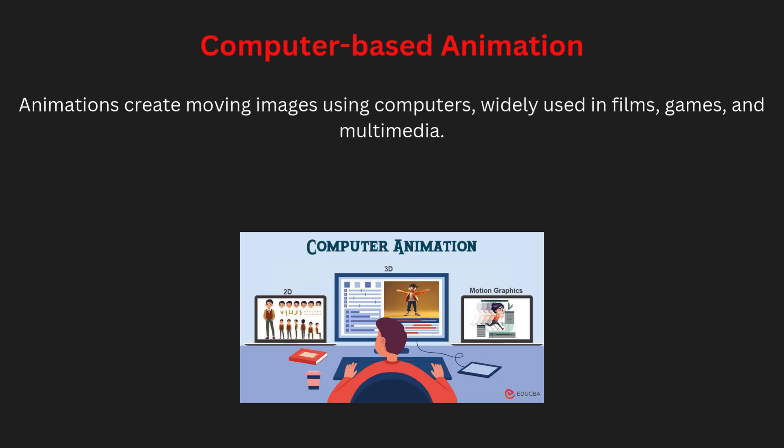Computer-based animation is the process of creating moving images using computers. These animations can be 2D, like cartoon-style animations, or 3D, like those seen in modern films and video games. The animation process involves creating a sequence of frames where each frame slightly changes from the previous one to create the illusion of movement. Software like Adobe Animate or Blender is commonly used to create animations for multimedia projects, making them engaging and interactive.